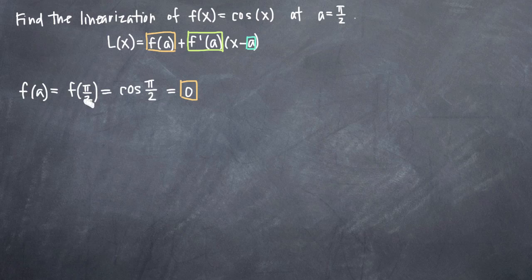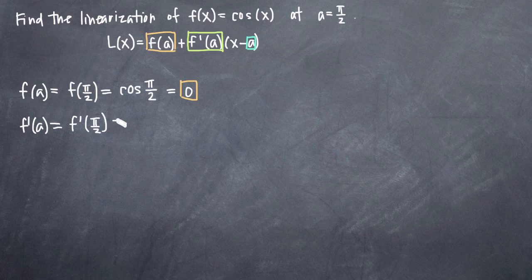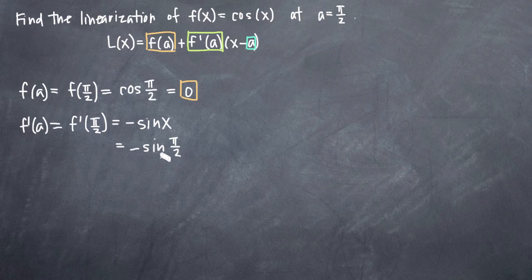The next thing that we need to find is f prime of a. In order to do that, we'll need to find the derivative of our original function. So we'll take the derivative of cosine of x — let's call this f prime of pi over 2. Remember that the derivative of cosine of x is negative sine of x. So negative sine of x is the derivative, but now we need to plug in our point pi over 2. So we're looking for negative sine of pi over 2. If we plug this into our calculator or look at the unit circle, we know that sine of pi over 2 is 1, which means that we have negative 1 here. So negative 1 will be what we'll plug in for f prime of a in our linearization formula.